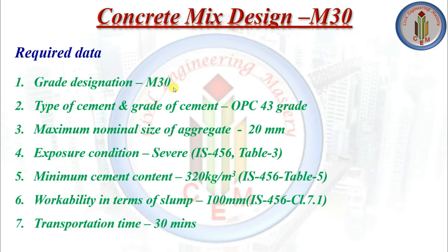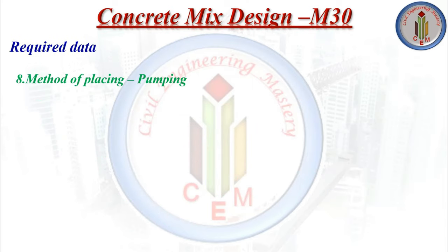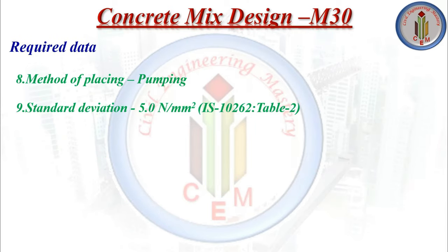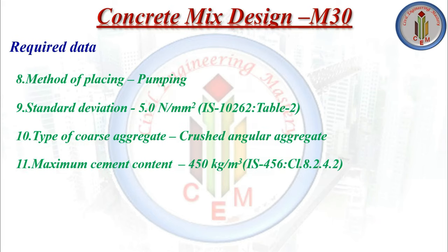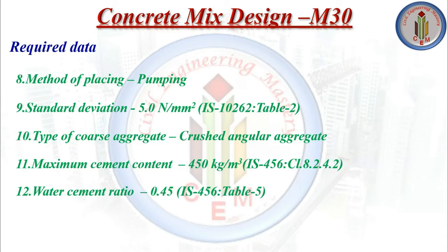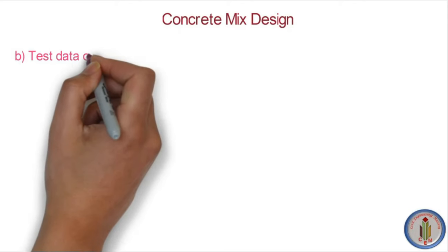The first required data is grade designation — our grade is M30. Grade of cement is OPC 43. Maximum nominal size of aggregate is 20 mm. Exposure condition is severe. As per IS 456 Table 3, minimum cement content is 320 kg per cubic meter. Workability in terms of slump is 100 mm. Transportation time is 30 minutes. Method of placing is pumping. Standard deviation is 5 N/mm². Type of coarse aggregate is crushed angular aggregate. Maximum cement content is 450 kg per cubic meter. Water-cement ratio is 0.45. Fine aggregate zone 2.